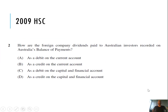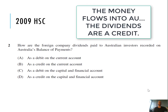First question: how are foreign company dividends paid to Australian investors recorded on Australia's balance of payments? The money is flowing into Australia, so it has to be a credit — A and C relate to debits, so they're not an option. Dividends are recorded as primary income on the current account, so the answer is B: credit, current account.